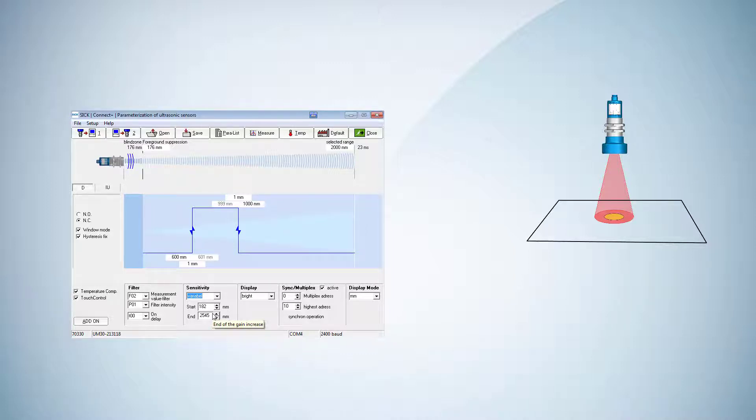We can adjust the start and end value of the linear increase of echo amplification. In our application, we want to set the sound cone as narrow as possible to look through the hole. We set the end value to the highest possible value in order to have the lowest increase in echo amplification and thus in sensitivity and sound cone size. Then we write the data into the sensor.